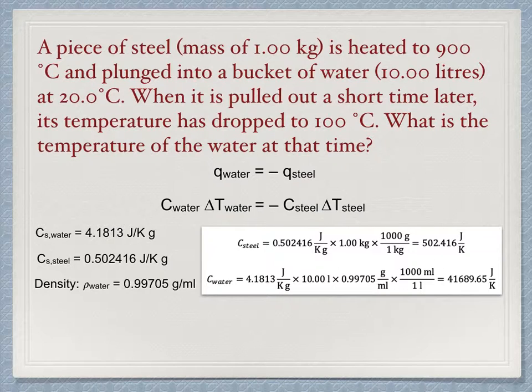First for the steel, take 0.502416 joules per kelvin gram times 1 kilogram times 1,000 grams per kilogram to get 502.416 joules per kelvin. That for water is a little longer as we need to make the volume and density conversions. Take 4.1813 joules per kelvin gram times 10 liters times 0.99705 grams per milliliter times 1,000 milliliters per liter getting 41,689.65 joules per kelvin.